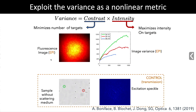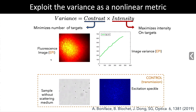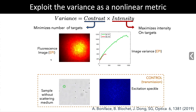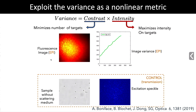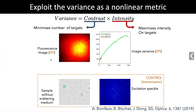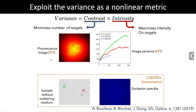They put up an experiment: optimize the variance of the speckle while sweeping the wavefront. Starting with a speckle, at some point you get a single bright point — a focus on a single bead. The image in transmission is only used for verification, not as feedback. They demonstrated this for a few beads. Now, let's use this for Raman.